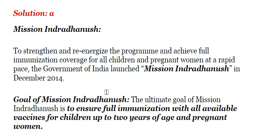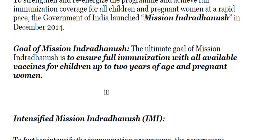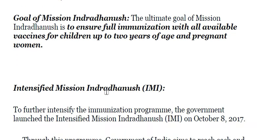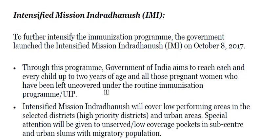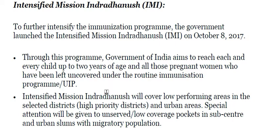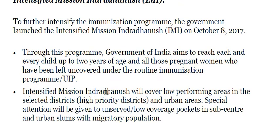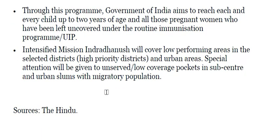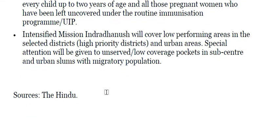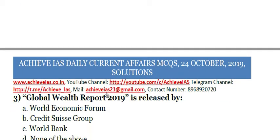The Government of India launched Mission Indra Dhanush in 2014. The goal was to ensure full immunization with all available vaccines for children up to two years of age and pregnant women. The Intensified Mission Indra Dhanush was a renewed version launched in 2017, aiming to reach each and every child up to two years of age and pregnant women left uncovered under the routine immunization program, covering low-performing districts, high-priority districts, urban areas, and urban slums with migratory populations.